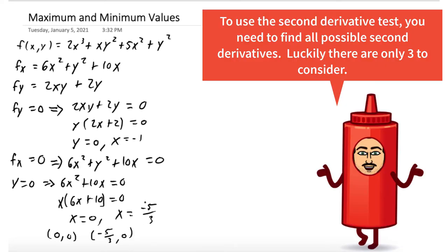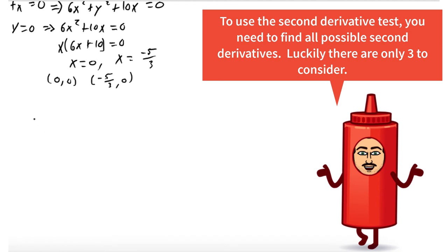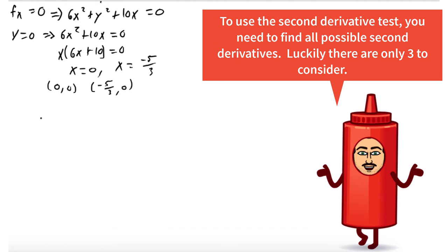So these are candidates for local max, local min, or saddle points. These points that we're finding. It's just like what we did in Calc 1.